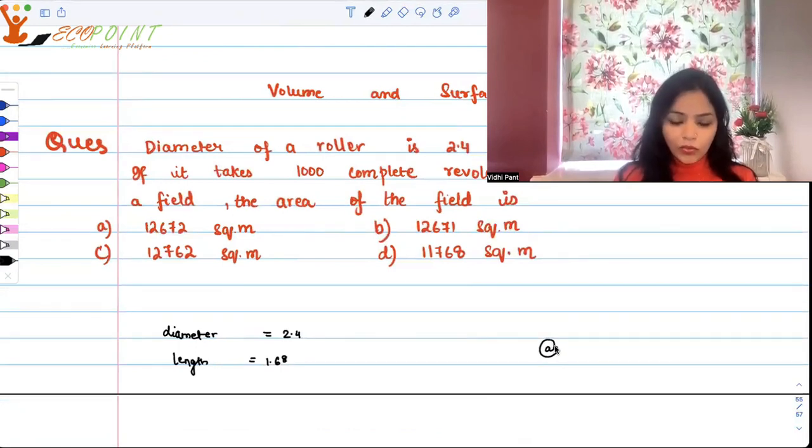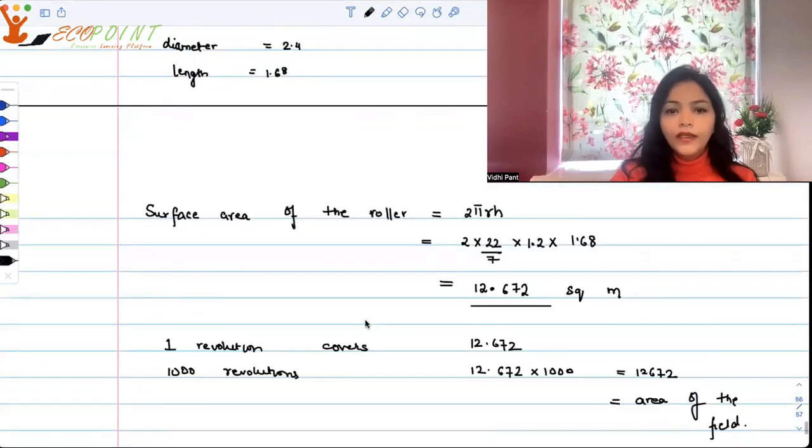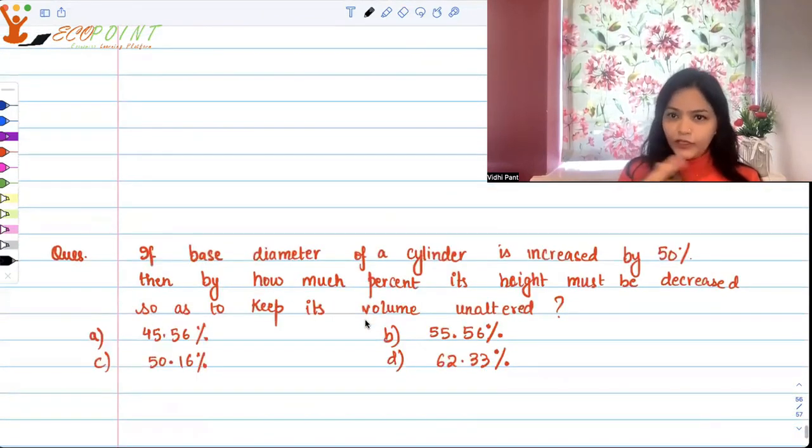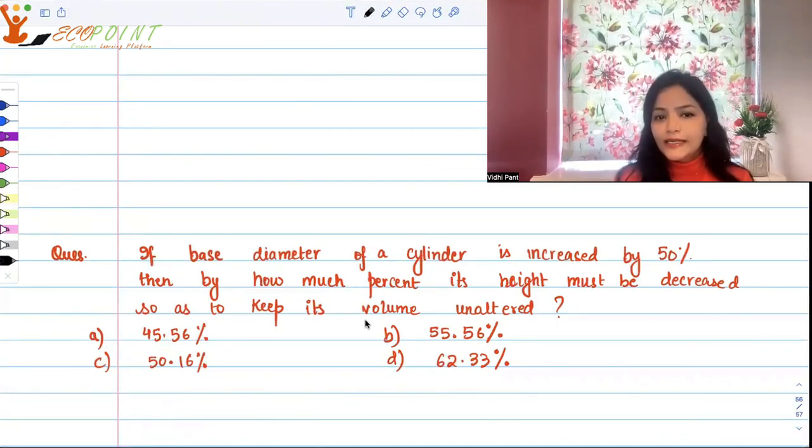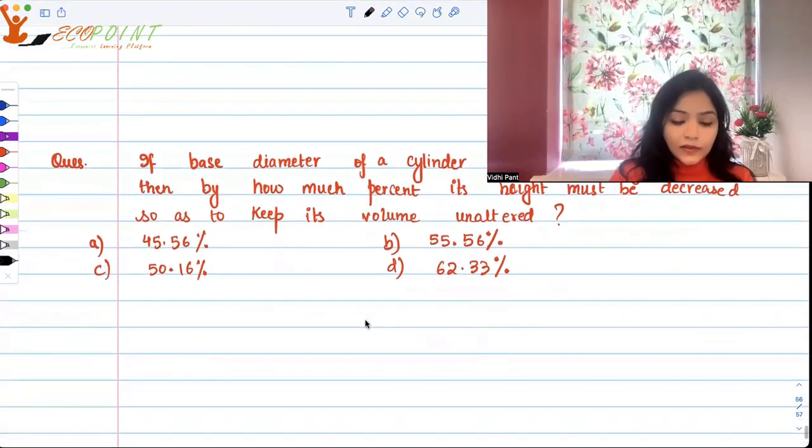Another question based on surface area and mensuration: If base diameter of a cylinder is increased by 50 percent, then by how much percent its height must be decreased to keep its volume unaltered? We are given the percentages as our options.